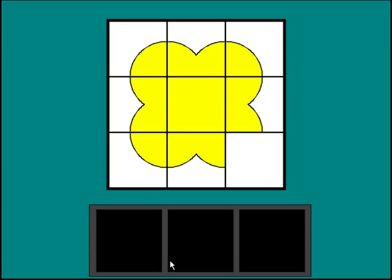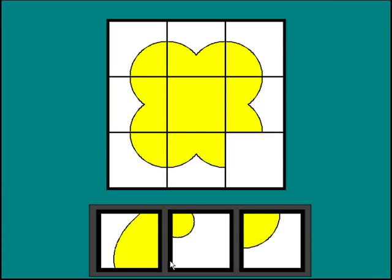This one looks like a carpet with a piece missing. At the bottom of the screen are three different pieces of carpet. Can you work out which piece goes into the missing space to finish the pattern?